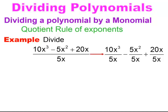First, separate it out into three separate division problems, so that you're dividing that 5x into everything the polynomial is. Take each piece and simplify. I'm going to simplify the first piece: 10 divided by 5 gives me 2, and x to the third divided by x gives me x squared. Remember, you're subtracting and the x has an exponent of 1, so you have 3 minus 1, and that's the x squared.